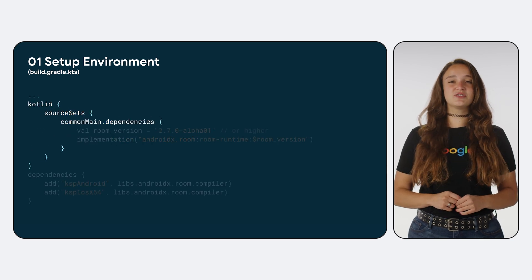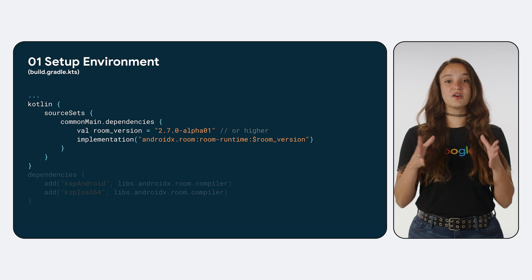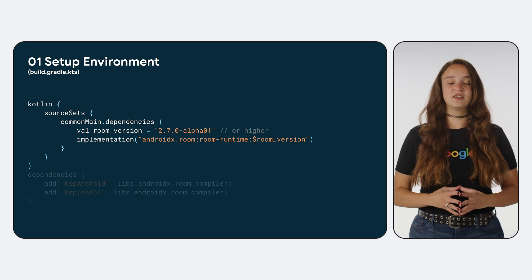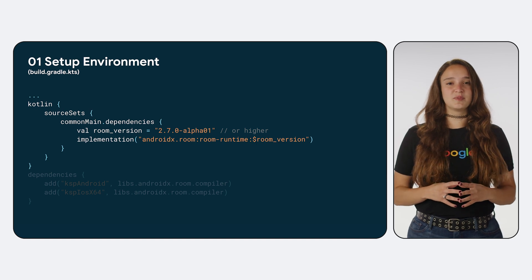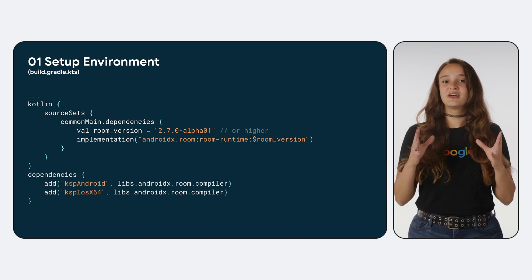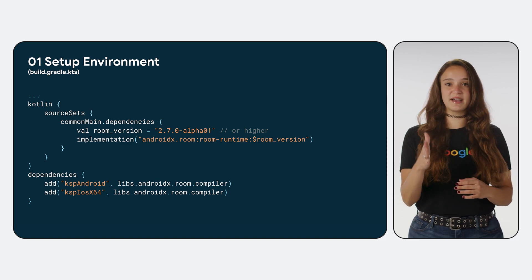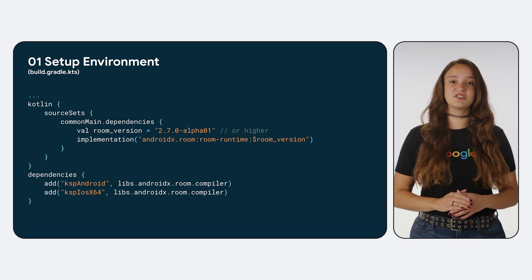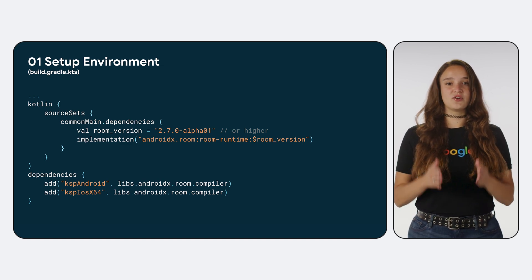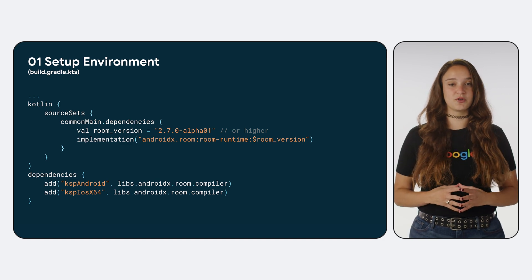Next up, you will need to set up your source sets. Because we'll be using Room in the common code of the KMP project, you will need to add the AndroidX Room runtime dependency. Note that KMP is available in Room version 2.7 Alpha 1 or higher. Lastly, you will need to add dependencies to set up the AndroidX Room compiler, which is the KSP processor that generates code for Room. Room generates different code based on the platform, so you'll want to apply the KSP processor to all the targets that you want to support.